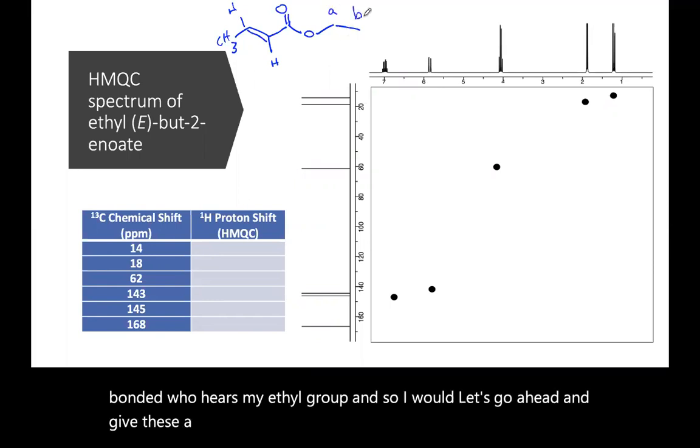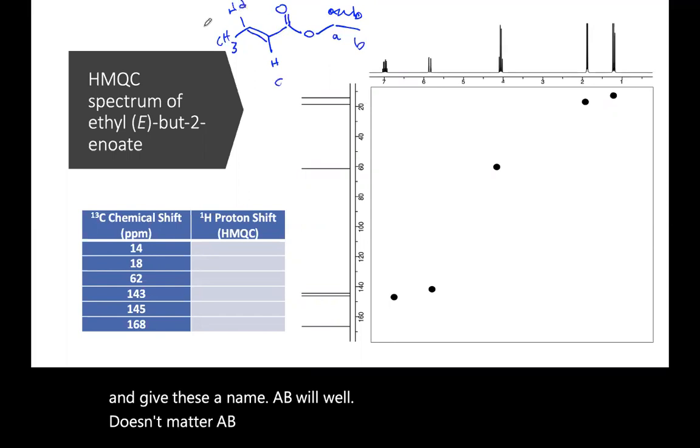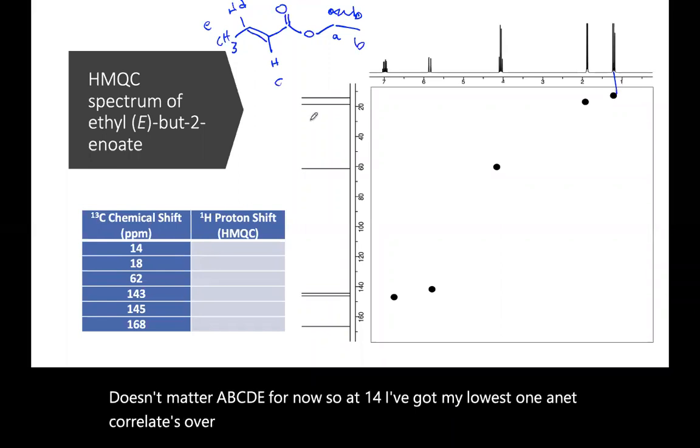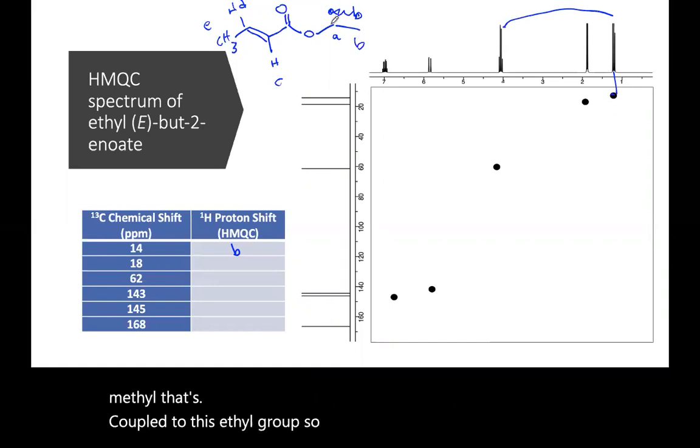A, B, C, D, and E for now. So at 14 I've got my lowest one, and it correlates over to this methyl. So 14 is B, because that's the methyl that's coupled to this ethyl group. So that's my ethyl right here. This is A, and A is at 60, which makes sense for being next to an oxygen.